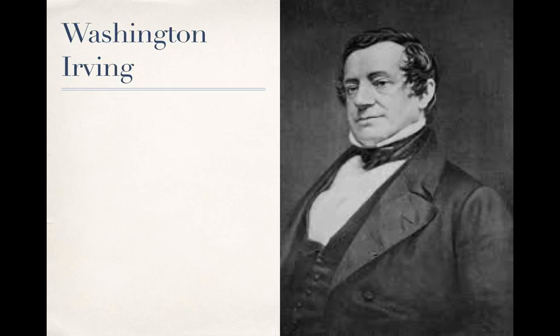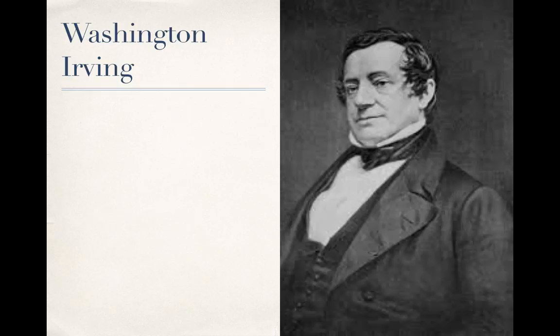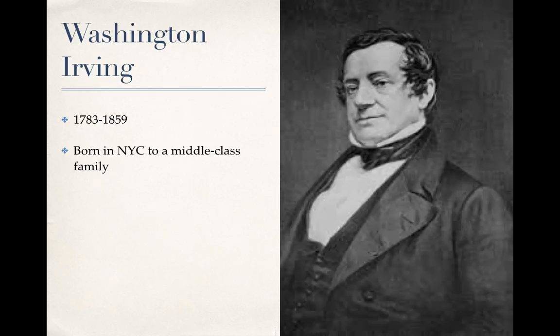All right, let's move on to Washington Irving. He lived from 1783 to 1859 and was born in New York City to a middle-class family. He was a first-generation American — both his parents were immigrants — so he grew up in a family of hardworking people and they did pretty well for themselves. When he was a young man in his late teens, he was kind of sickly and showed signs of tuberculosis, so his brothers actually sent him to Europe for two years where he could get better care and be in a place better suited for his health.